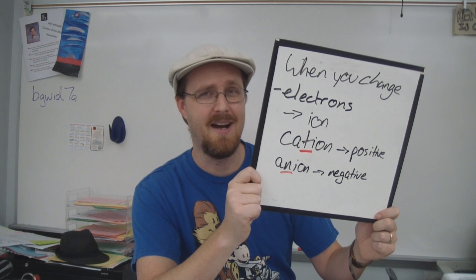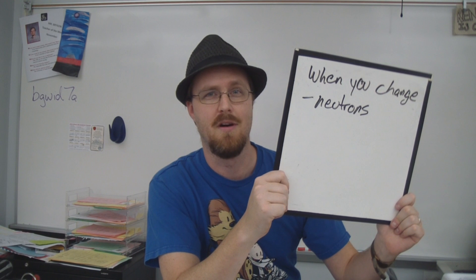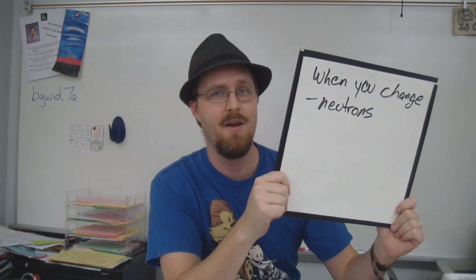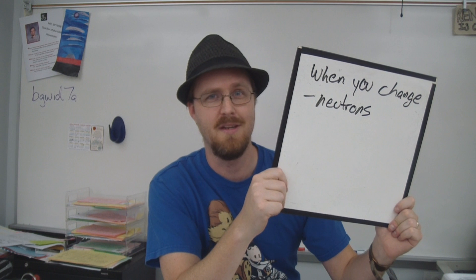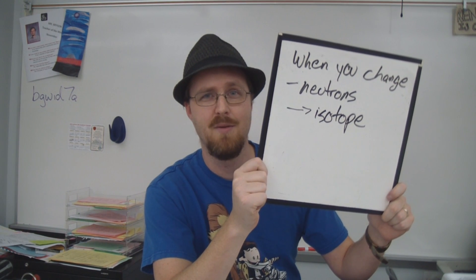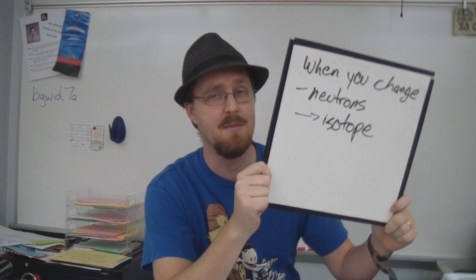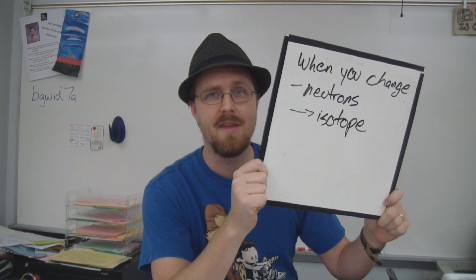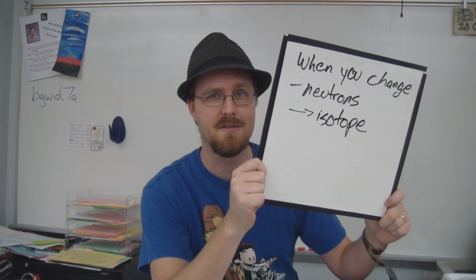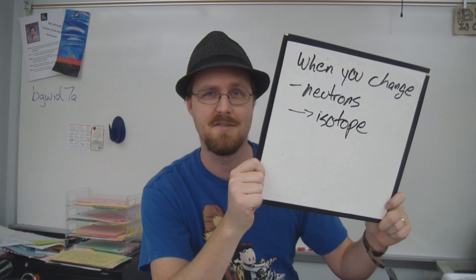So those are the ions. But what about when you change the neutrons? When that happens, you get another I word, which happens to be an isotope. Isotopes are two atoms that are the same element — so they have the same atomic number — but they have a different number of neutrons, thus giving them a completely different mass.